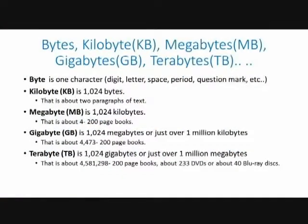Then you go up to what they call a megabyte, which is the common storage unit for most things these days. To put that into perspective, that would be about four 200-page books. Then we go from there to a gigabyte — a gigabyte is 4,473 200-page books. Now the big thing that most of us know about is terabytes. To put that in perspective, one terabyte handles a little over four and a half million 200-page books. If you had one terabyte of storage, you could put about 233 DVDs with about four hours of information on them, or about 40 Blu-ray discs.